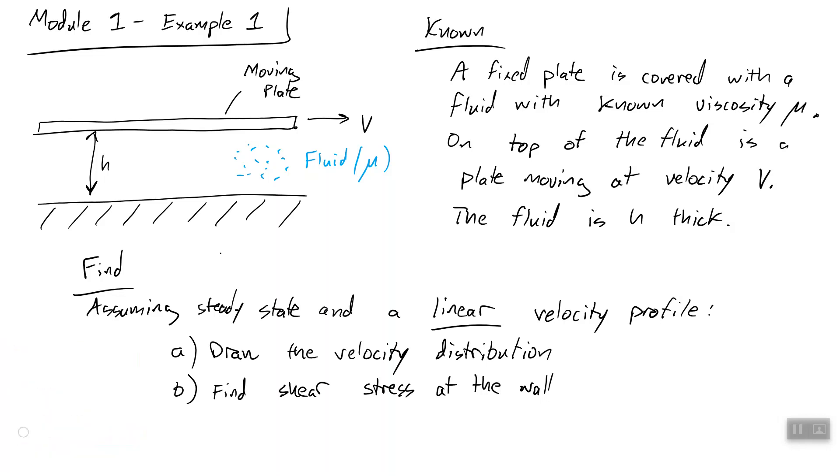We have down here a rigid wall that is not moving, and then up here we have a plate that extends infinitely in either direction to the left and right, and it is moving to the right with a velocity of v. In between this fixed plate and the moving plate is a fluid with a viscosity of mu. So these are the things we know. We also know the distance between the fixed plate and the moving plate is h.